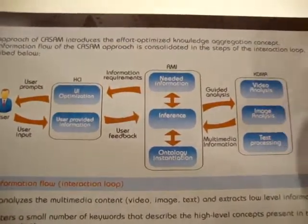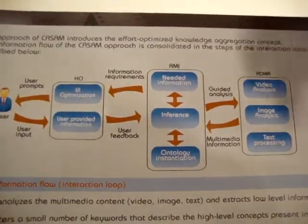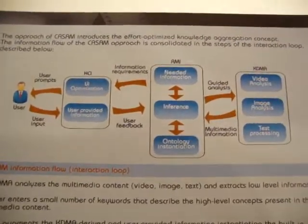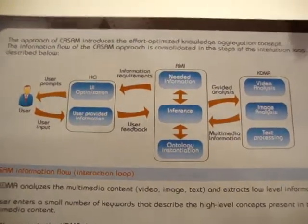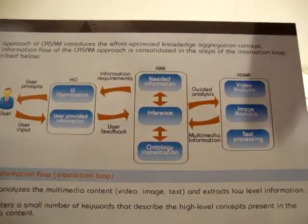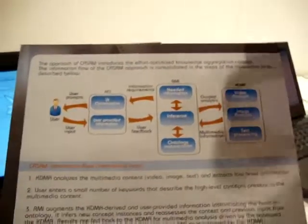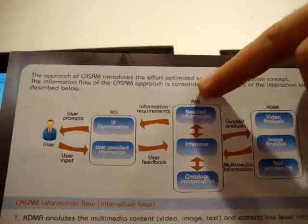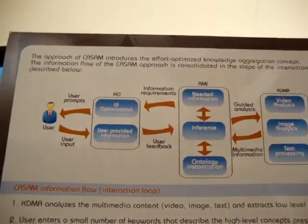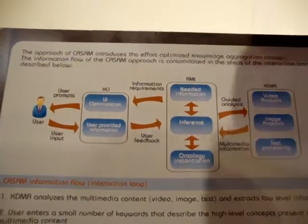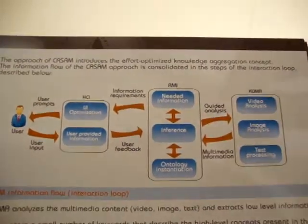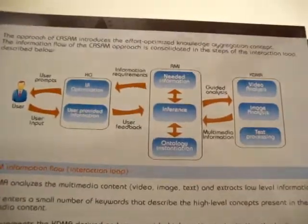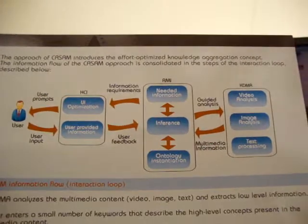Imagine that KDMA can analyze a photo and can, for instance, detect a sun and the sea. This information is moved to the RMI which does the reasoning. For the specific example where you have the sun and the sea, it can infer new knowledge.